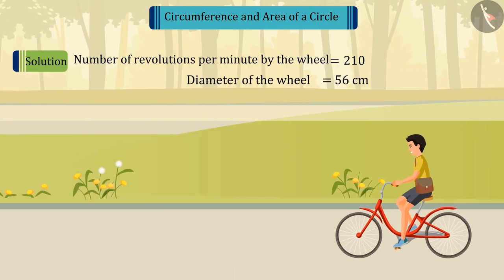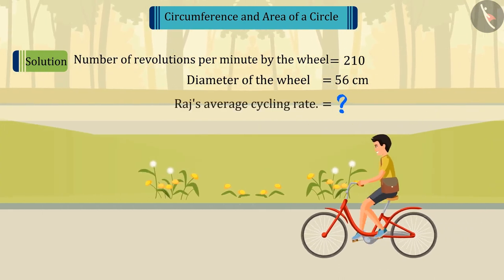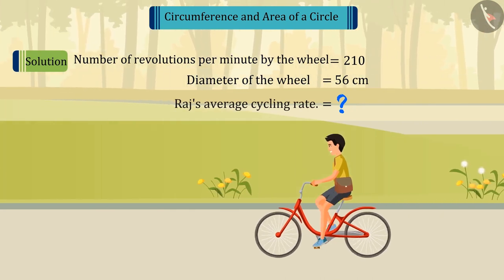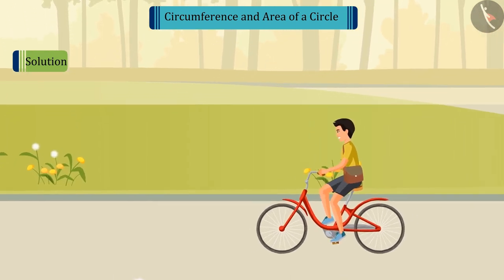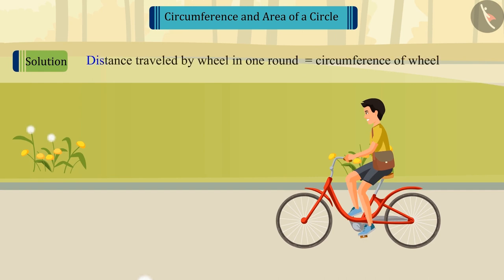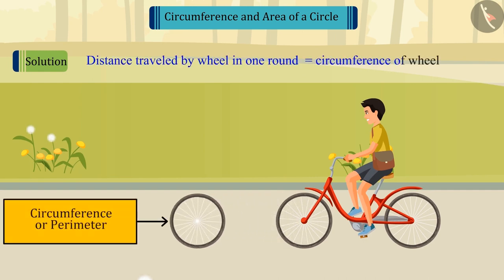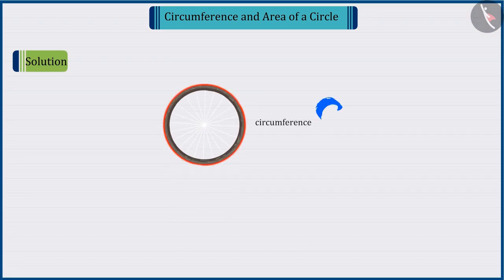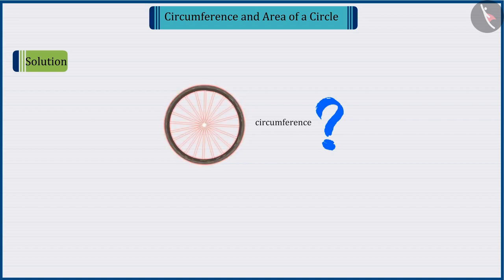We see that the speed with which Raj is cycling per hour is the distance travelled by the cycle in one round. Therefore, we can say that the distance travelled by a wheel in one round is equal to its circumference. But we do not know the value of its length, i.e. its circumference. So, can you find the perimeter of the wheel?